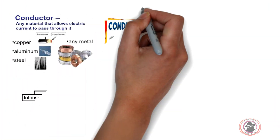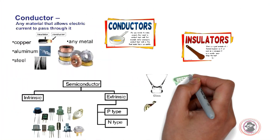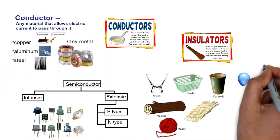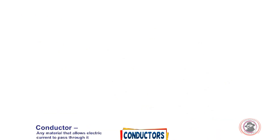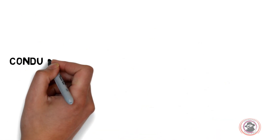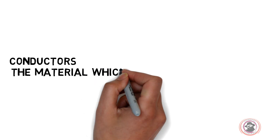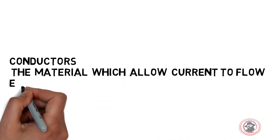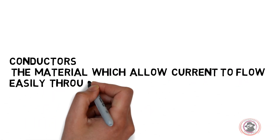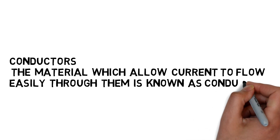This is a conductor, insulator, and semiconductor. The material which allows current to flow easily through them is known as a conductor.